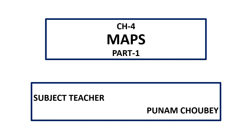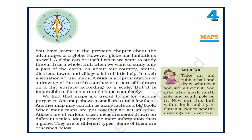Hello everyone, today we are going to learn Chapter 4: Maps, Part 1. In this part we will study about the meaning of a map and its main components — distance, which is expressed with the help of scale, and direction. A map is a representation or drawing of the earth's surface or a part of it, drawn on a flat surface according to a scale. Scale is very important; without scale a map can't be drawn.